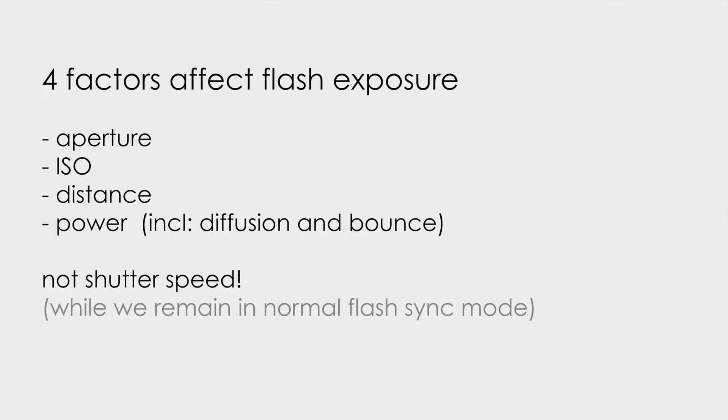Before we go much further, we have to go over basic settings — the essentials. With flash exposure, there are four factors affecting our exposure: aperture, ISO, distance, and power. Two things on the camera — aperture and ISO — and two things to do with the flash: distance from the flash to the subject, and power. We have an acronym: PAID — Power, Aperture, ISO, Distance. Easy to remember.